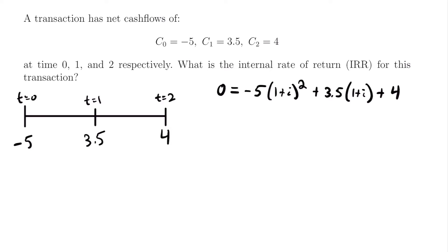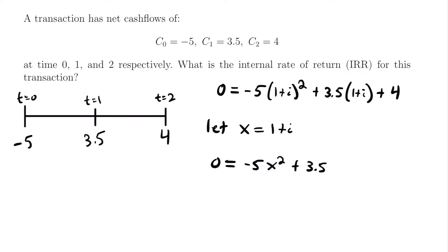We have successfully set up our equation of value and are ready to solve for i, the internal rate of return. To solve for that rate i, we are going to set 1 plus i equal to another variable, which will let us more easily see how to solve this equation — because what we have here is a quadratic equation. If we let x equal 1 plus i, we just introduce a new variable to simplify things. So we have 0 equal to negative 5 times x squared plus 3.5 times x plus 4, simply replacing (1 plus i) with x.